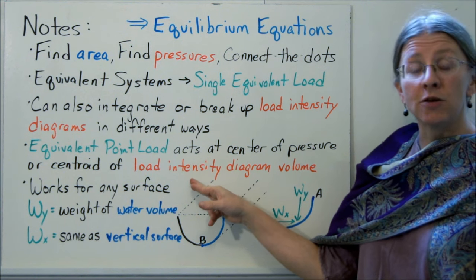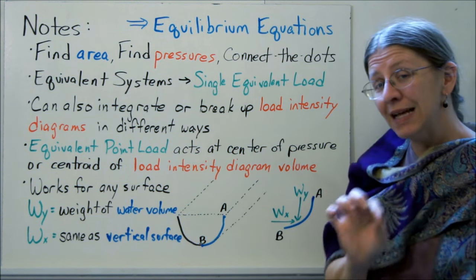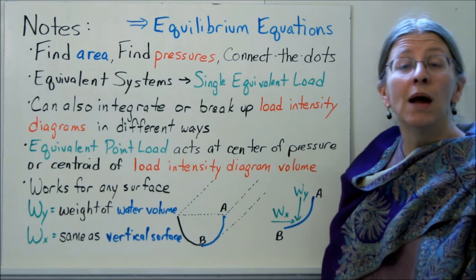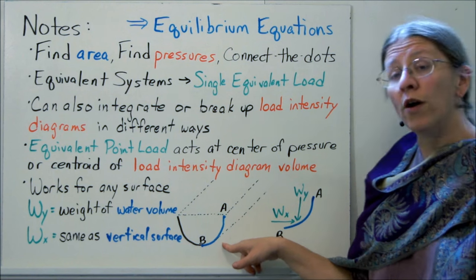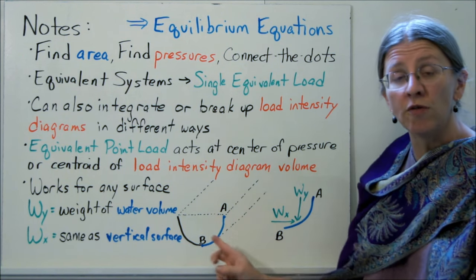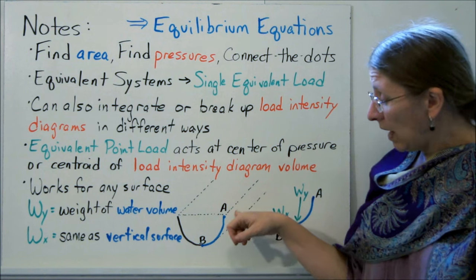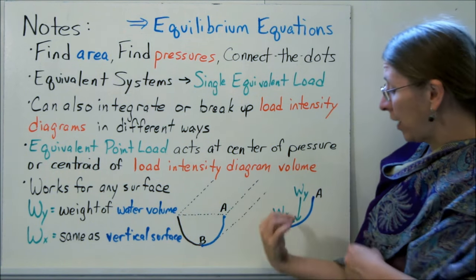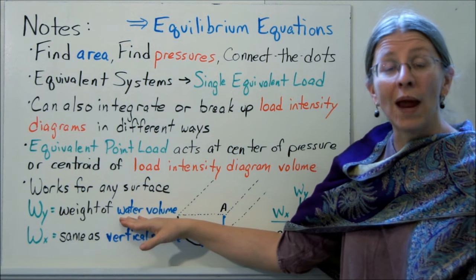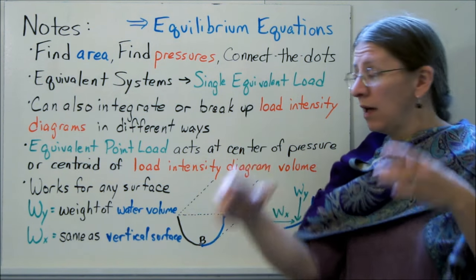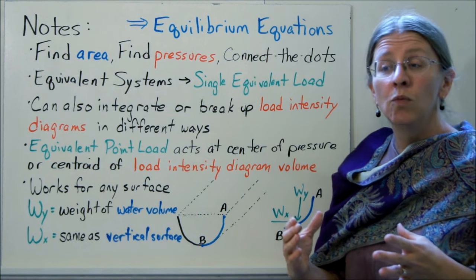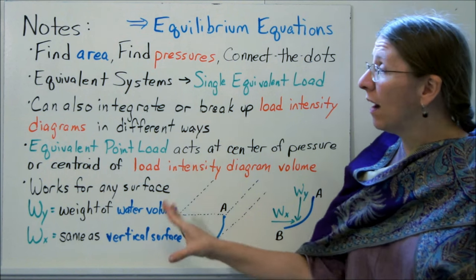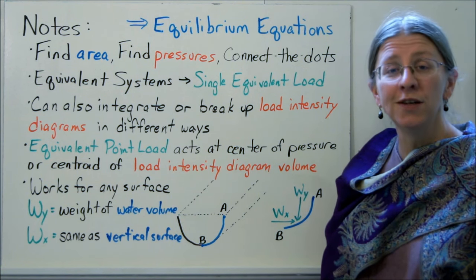The equivalent point load acts at the center of pressure. That's going to be the centroid of the load intensity volume, not the volume of the plate or anything else. And bear in mind that this will work for any kind of surface. So if you look at this sort of water trough, a semicircular trough going back into the page, if I look at how the water pressure is acting on the surface AB, I can do the same thing. I can break it up into Wx and Wy. Wy is going to be the weight of the water acting over the plate, and Wx is going to be the same even if it hadn't been slanted at all, just like it was in our slanted surface problem. So from there, you can solve most any kind of hydrostatic problem that you need to. Thanks.